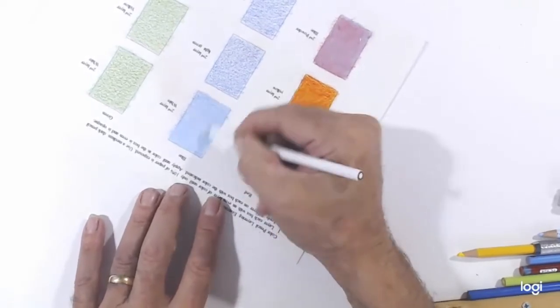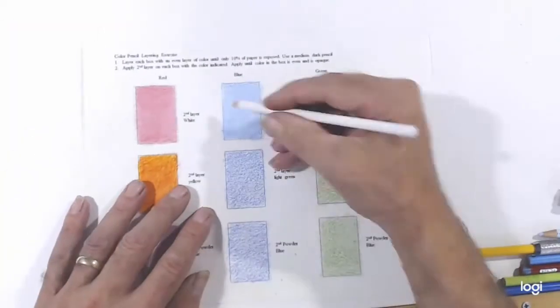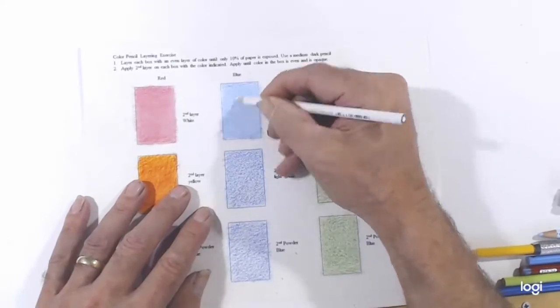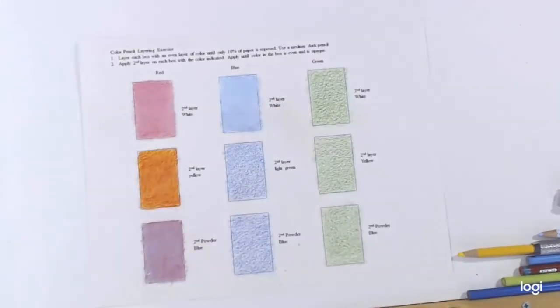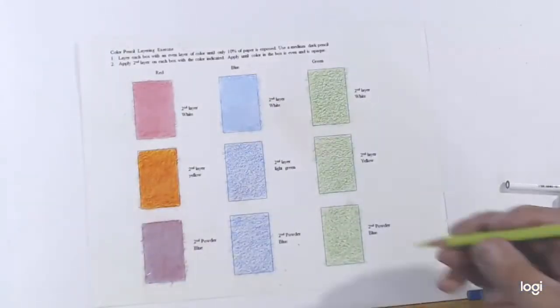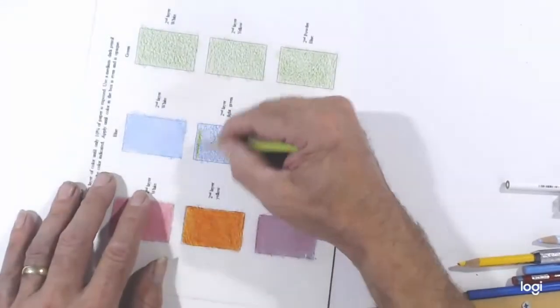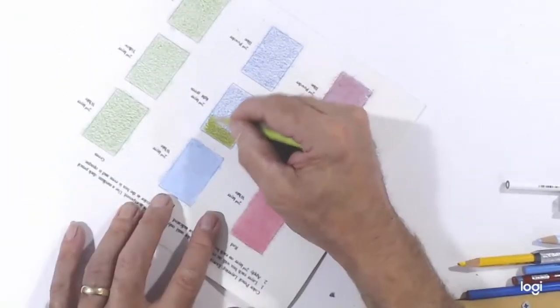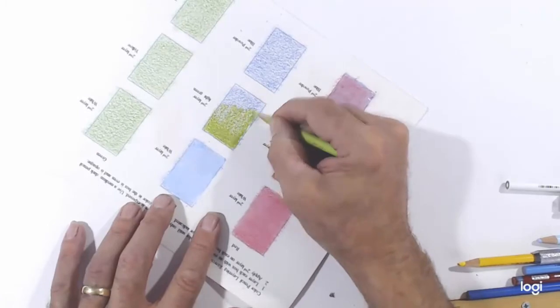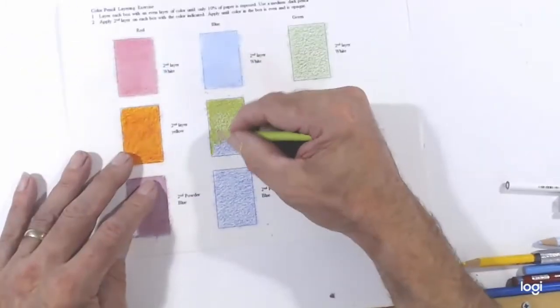On the green boxes, the top box will be white, the second box will be yellow, and the third box will be powder blue as well. And I will also try to finish those the same as I did the other boxes to make a very even solid and opaque color.